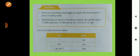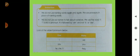Now we do not use naming words again and again — that time we use pronouns in place of the naming words. We do not use our names to talk about ourselves; that time we use the word 'I.' I is also a pronoun. It is followed by 'am' and not 'is' or 'are.' For example: I am a teacher — we use 'am' here.